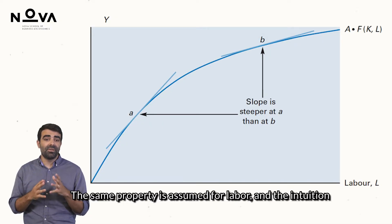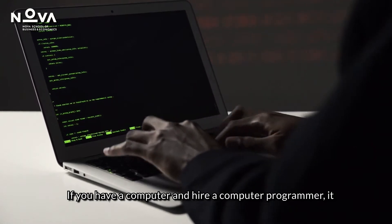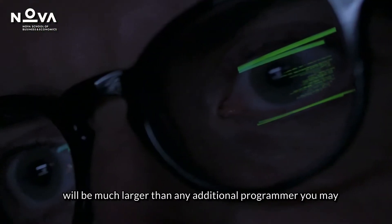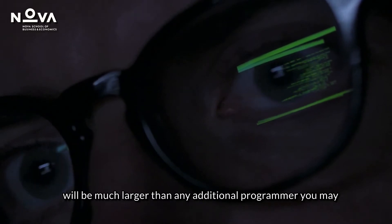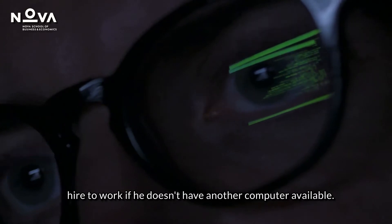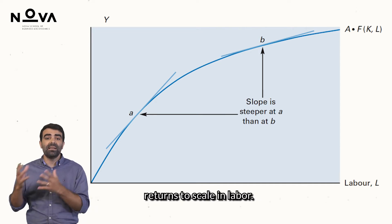The same property is assumed for labour, and the intuition is similar. If you have a computer and hire a computer programmer, it is clear that the amount of computer code that is now produced will be much larger than any additional programmer you may hire to work if it doesn't have another computer available.